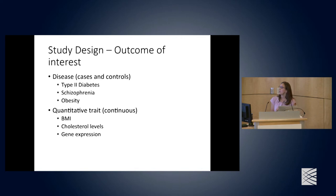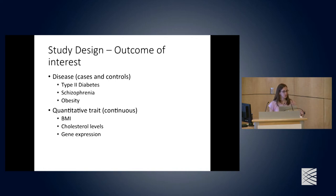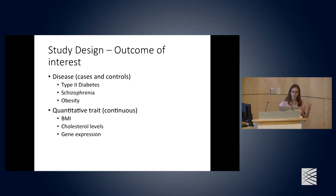When designing your study, first think about your outcome of interest — whether it's a dichotomous or a continuous trait. Importantly, before starting your GWAS, you need to confirm that there is a genetic component to your trait. If you don't find any heritability, you're going to have a difficult time finding genetic variants associated with that trait. You can run case-control studies or look at quantitative traits.